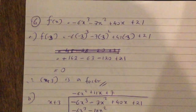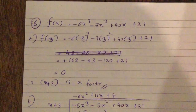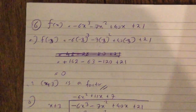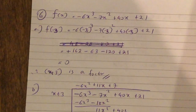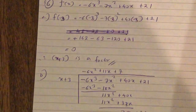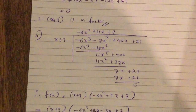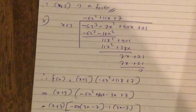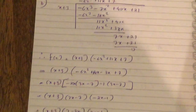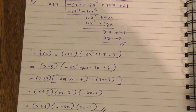The total area is 2 lots of 4.1 plus 10.84, which is 19.04. Question 6 is a factorizing question. f(x) equals minus 6x cubed minus 7x squared plus 40x plus 3. f(minus 3) equals 0, so x plus 3 is a factor. Dividing gives x plus 3 times (minus 6x squared plus 11x plus 2), which factorizes into three brackets: (x plus 3)(3x minus 7)(minus 2x minus 1).